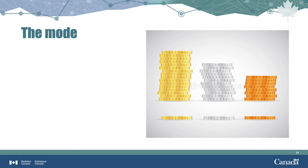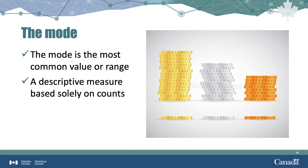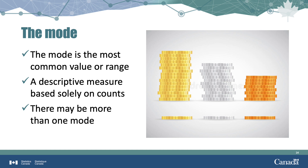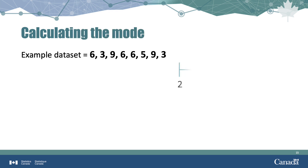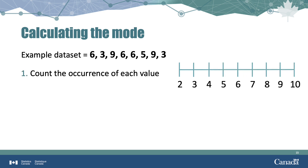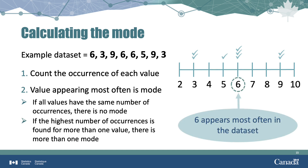The third measure of central tendency is called the mode. The mode is the value that occurs most often in a dataset — in other words, it is the most frequent data point. The mode is the simplest measure to determine and is not influenced by extreme values. To find the mode, count how many times each number occurs; the number that appears most often is the mode. Note that if all values have the same number of occurrences, there is no mode. And if the highest number of occurrences is found more than once, then there is more than one mode, in which case the mode may not be a good measure of central tendency.